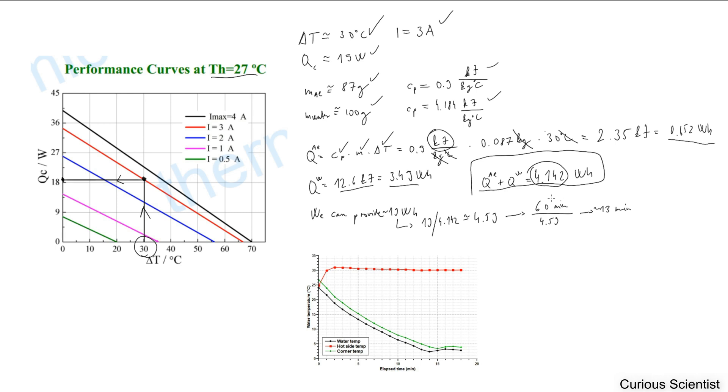Then we can see the ratio between the 19 watt hours and the 4.14 watt hours, and that is basically 4.59.